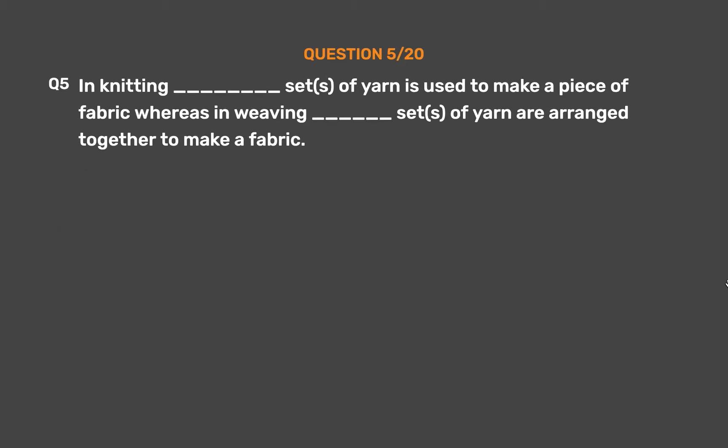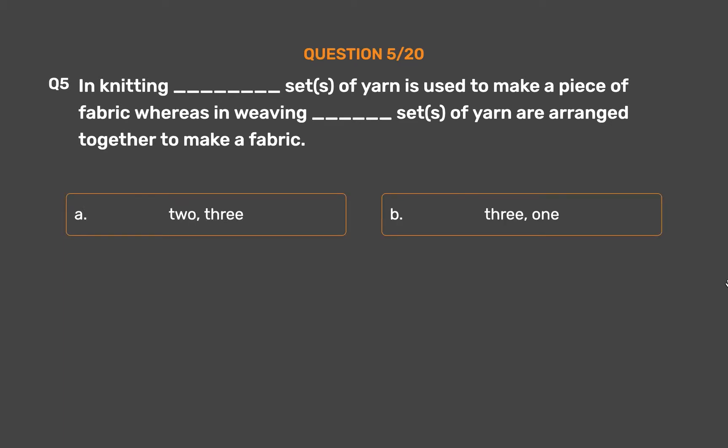Question number 5. In knitting, __ set(s) of yarn is used to make a piece of fabric, whereas in weaving __ sets of yarn are arranged together to make a fabric. Option A, 2 and 3; Option B, 3 and 1; Option C, 1 and 1; Option D, 1 and 2.